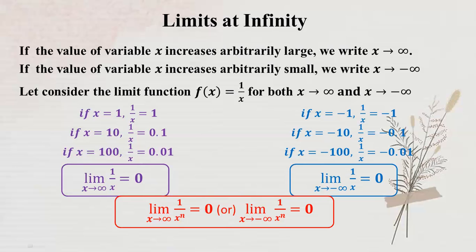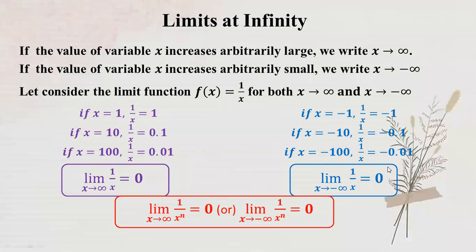So you can see that the limit of 1 by x power n as x tends to infinity equals zero. This is the key property we will use.